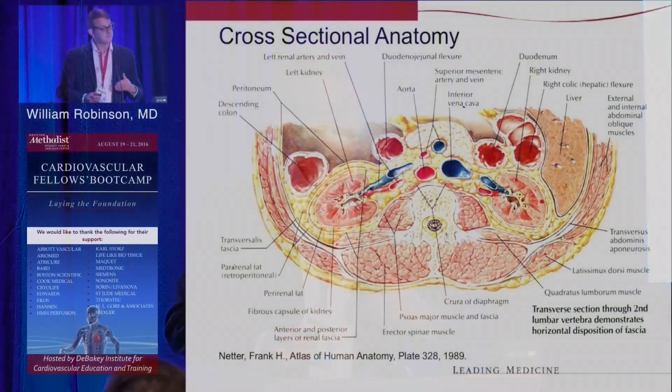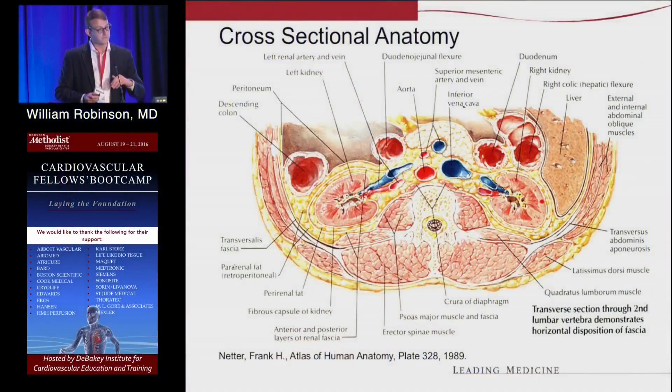A point to be made here: you can go anterior to the kidney or posterior to the kidney when getting to the aorta from the left side. It just depends on what your needs are. There are avascular planes both anterior and posterior to the left kidney to get to the aorta.